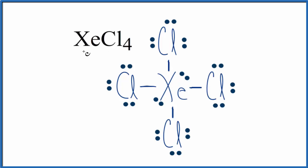So, to figure out whether this XeCl4 is polar or nonpolar, let's look at the individual bonds. Let's look at the bond between the xenon and the chlorine, see what the electronegativity difference is.